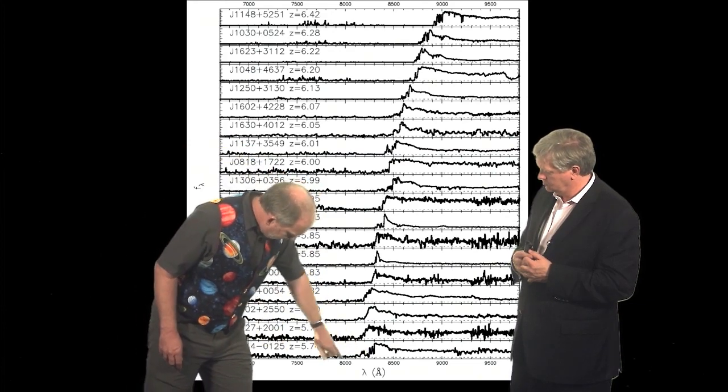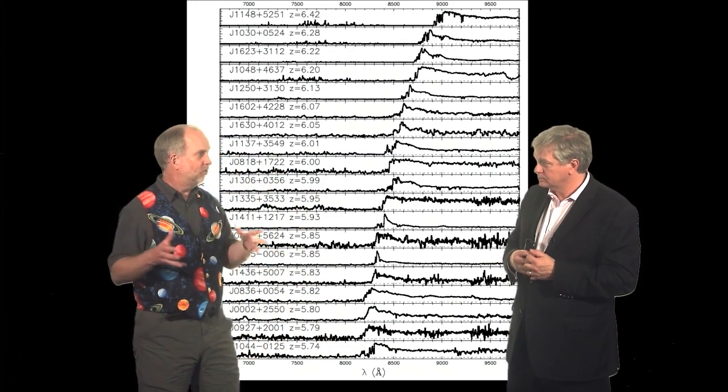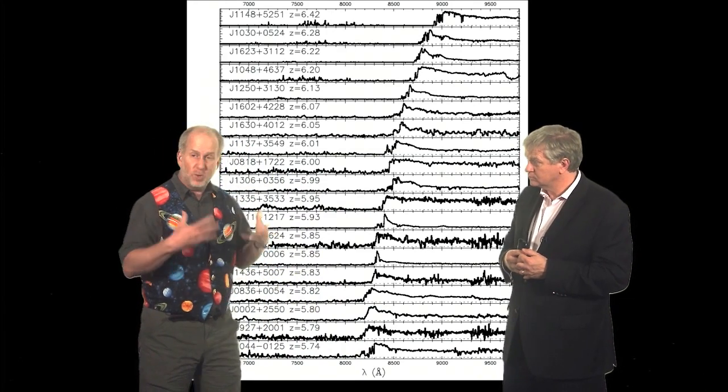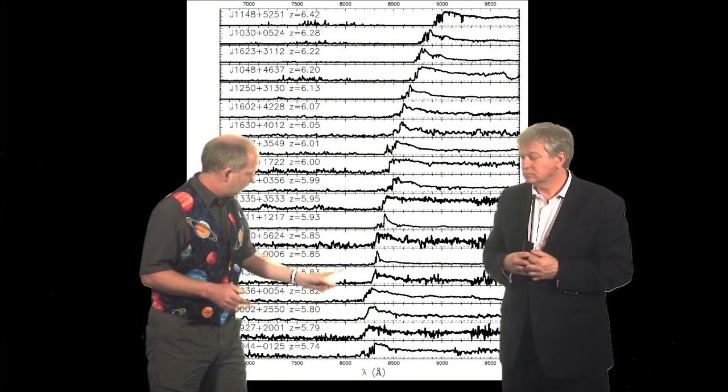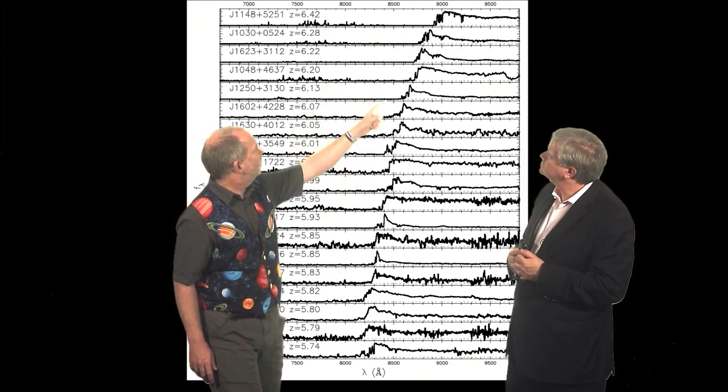And the ones down here, they don't have much light, but they have some. This is the Lyman alpha we've been talking about. The light gets chewed up by individual clouds, but in between the clouds the gas has been ionized. But something strange happens by the time you get up to a little bit above redshift of 6 maybe.